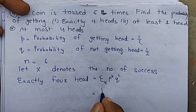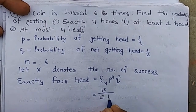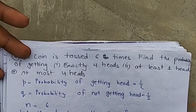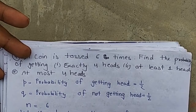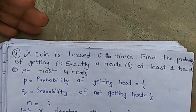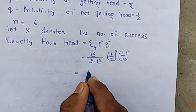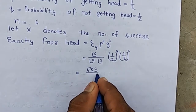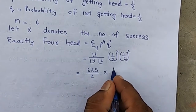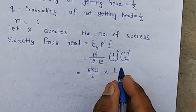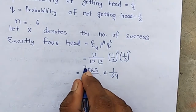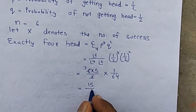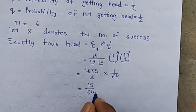The value of 6C4 = 6! / (4! × 2!). With P = 1/2 to the power 4 and Q = 1/2 to the power 2, we get 6C4 = 15. So P(X=4) = 15 × (1/2)^6 = 15/64.